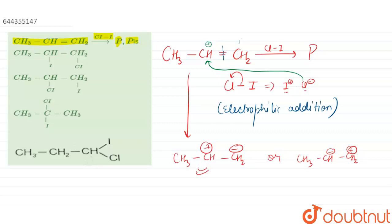What will happen is, the CL minus nucleophile will attack at this position, because here less number of hydrogens are there. So here it will follow Markov-Nikov rule.